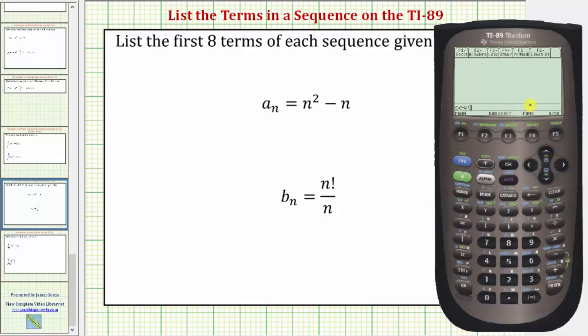And now we enter the formula. Notice a sub n is equal to n squared minus n. So we need to enter n squared minus n.